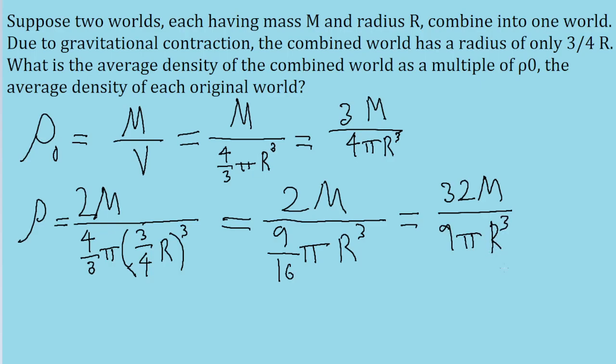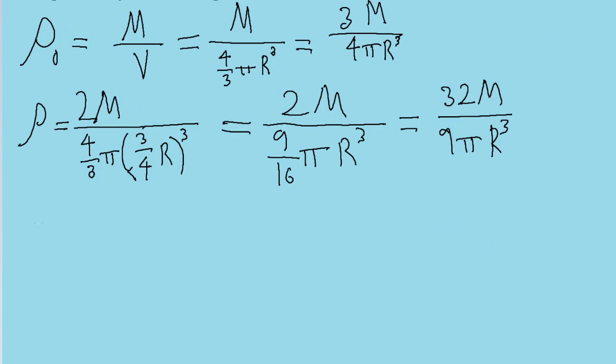Now the problem asks for the average density of the combined world as a multiple of ρ₀. So to solve for that, let's take the ratio of ρ divided by ρ₀. So we establish that ρ is equal to 32M divided by 9π R³.